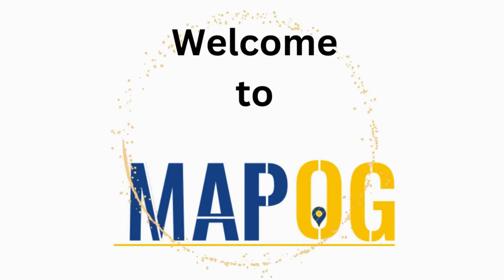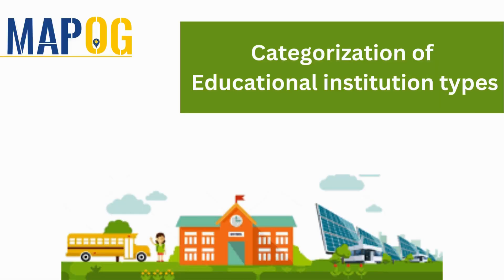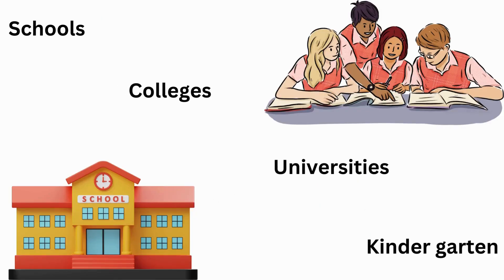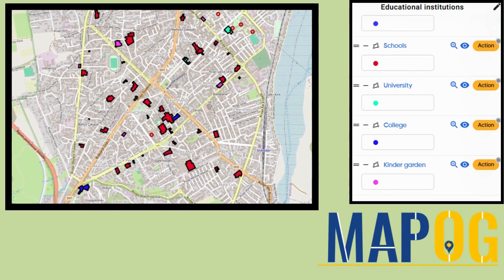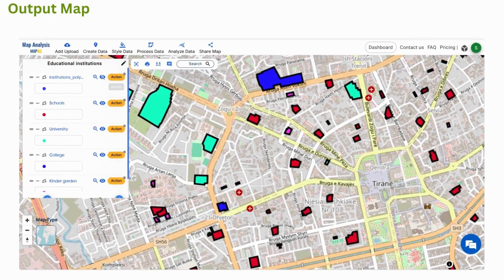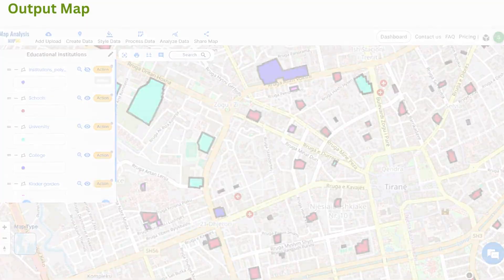Welcome to MapoG, a complete solution for your mapping concepts. In this video, we'll explore how we use the MapoG GIS platform to filter out various educational institution types such as schools, universities, and colleges from a common dataset. Our output map showcases the categorization of different types of educational institutions using the proximity analysis tool. Let's create this map.